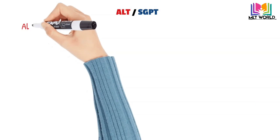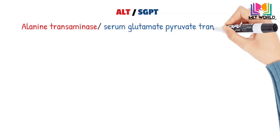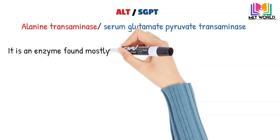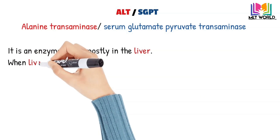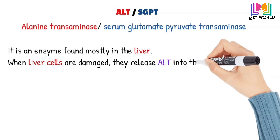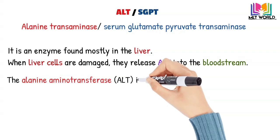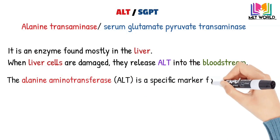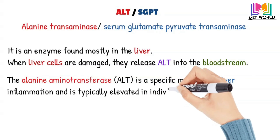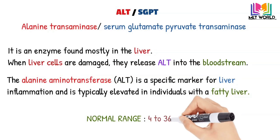Next is ALT, also known as SGPT. ALT stands for alanine transaminase and SGPT stands for serum glutamate pyruvate transaminase. This enzyme is primarily produced by the liver, making it more specific for checking liver damage. When liver cells are damaged, they release ALT into the blood. ALT is the most specific marker for liver inflammation and is typically elevated in individuals with fatty liver. Normal range of ALT is 4 to 36 IU/L.